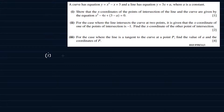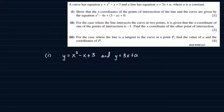For this question, we have the curve y is equal to x squared minus x plus 3, and we have the line y is equal to 3x plus a. Since the curve and the line are intersecting, we can combine the two equations, and since they are all in the form y in terms of x, we can safely say x squared minus x plus 3 is equal to 3x plus a.